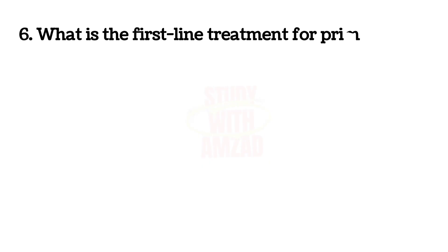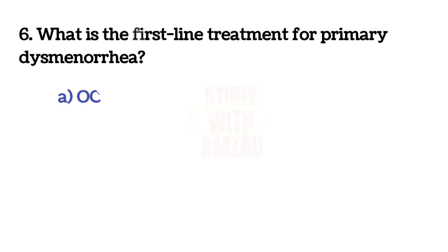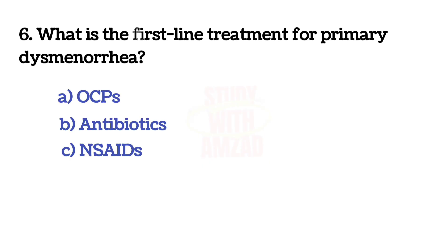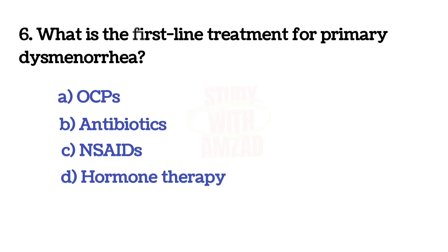What is the first line treatment for primary dysmenorrhea? The correct answer is C: NSAIDs.